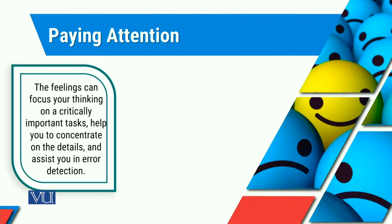We need to focus on our feelings and thoughts. It is said that feelings can focus your thinking on a critically important task — that is our selective perception — which gives priority to our expectations. That comes and appears into our selective perception. That is how we develop our heuristics, which we can call judgmental shortcuts. All these things are going to help you concentrate on details and assist in error detection.